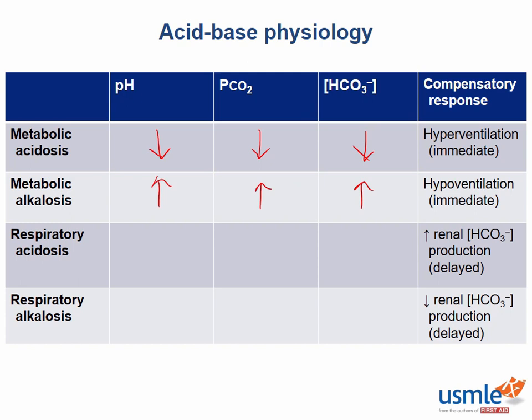When the gastric parietal cells secrete hydrochloric acid into the stomach to begin the digestion of food, they also secrete bicarb ions across the basolateral membranes into the blood, causing a slight elevation in total blood pH. In order to compensate for this alkalosis, we start hypoventilating in an effort to retain as much CO2 as possible. In layman's terms, this is what's called a food coma.